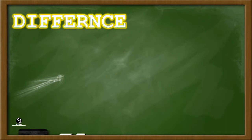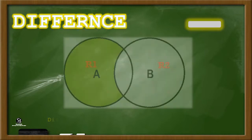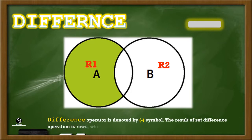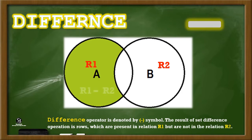Difference. The Difference operator is denoted by the minus symbol. The result of the set difference operation is rows which are present in relation R1 but are not in relation R2.